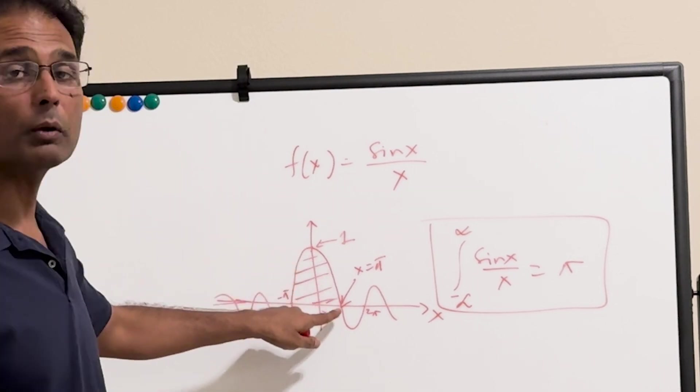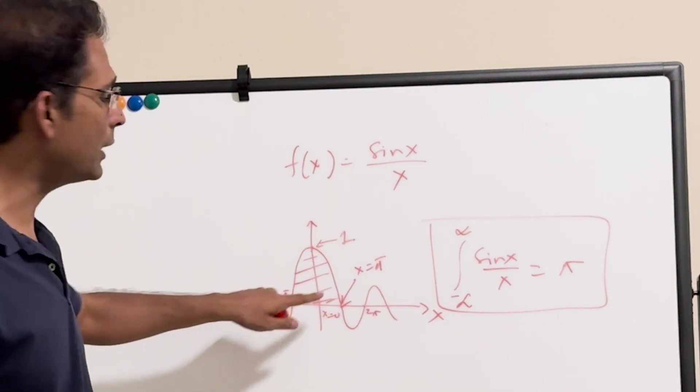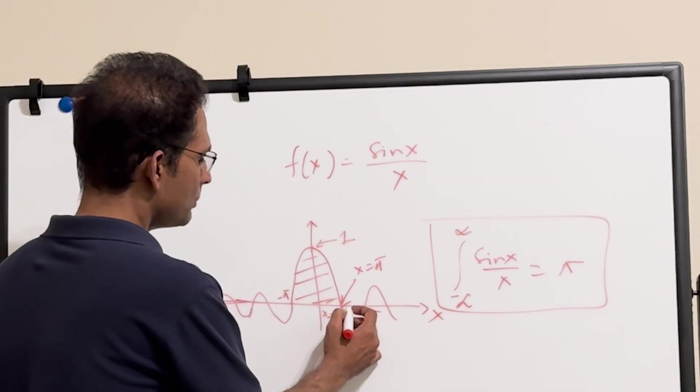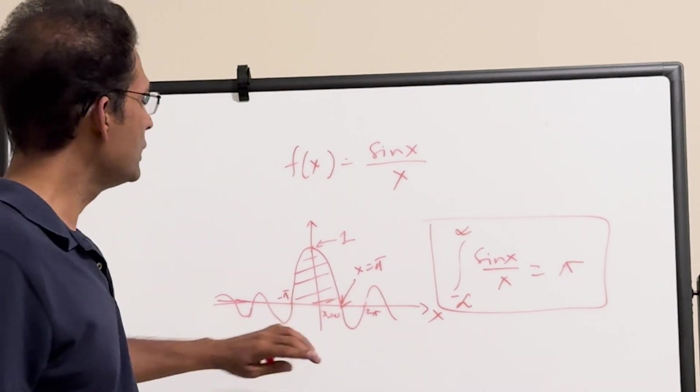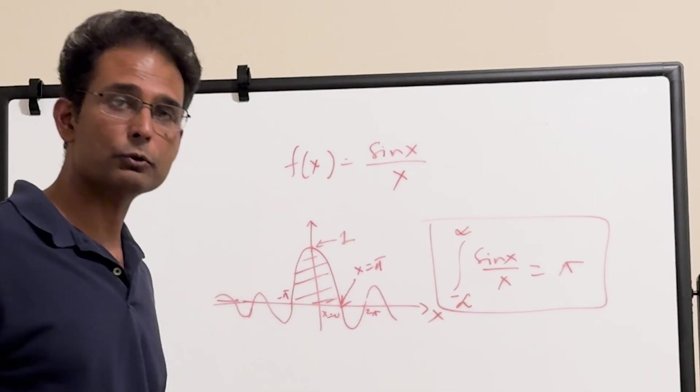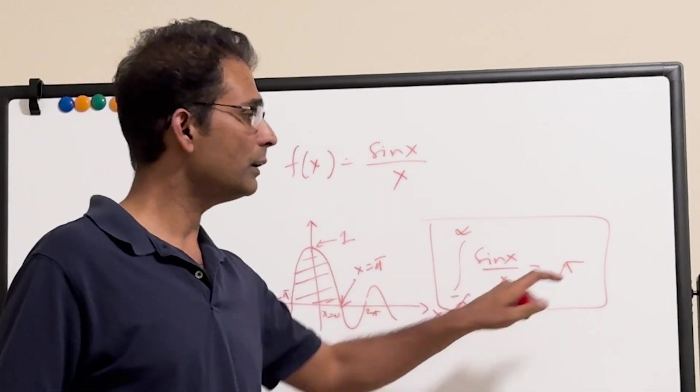So this is the principal lobe, it has a positive sign, and then you add this bar, which will have a negative sign, and then this one is positive and so on. So if you add up all the areas with proper signs, they add up to pi.